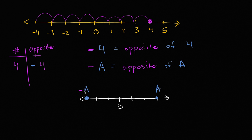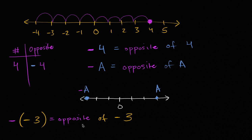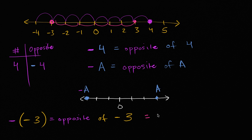Negative, negative a. So with that in mind, if we literally view this negative symbol as meaning the opposite of whatever follows it, let's try something interesting. What would be the negative of negative three? Well, this negative means the opposite, so this means the opposite of negative three. Negative three is three to the left of zero, so its opposite is going to be three to the right of zero — positive three. So the negative of negative three equals positive three.